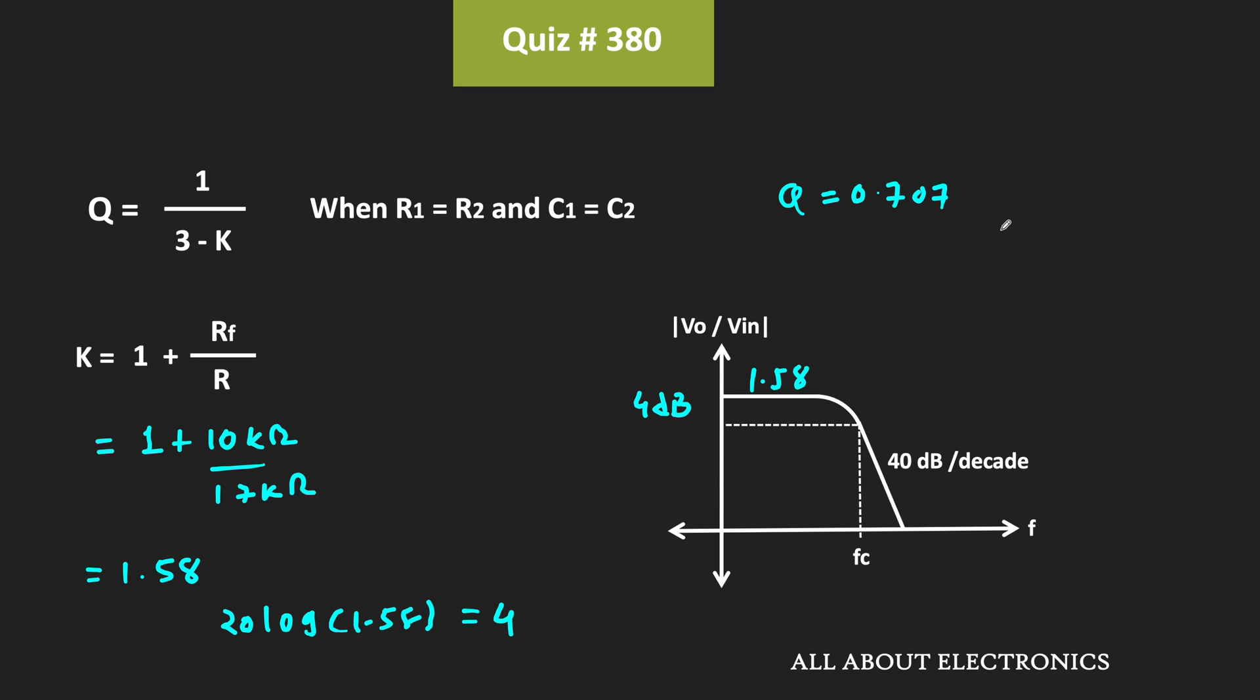this means the filter is a Butterworth low-pass filter. At this cutoff frequency, the gain will reduce by 3 dB, which means at this point the gain will equal 1 dB.